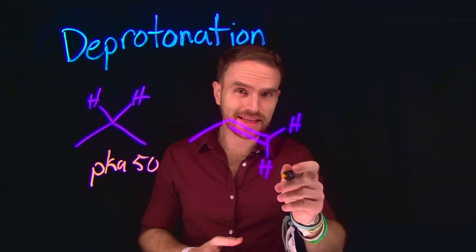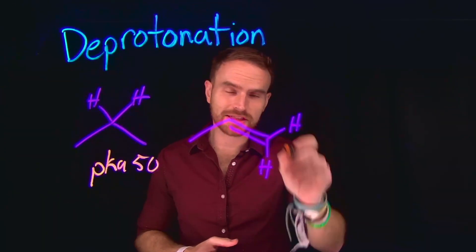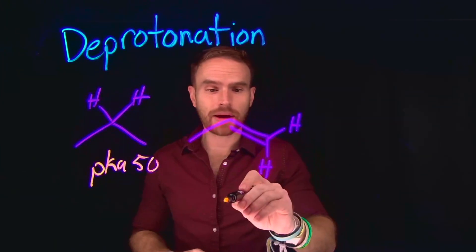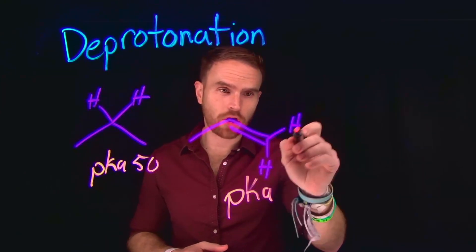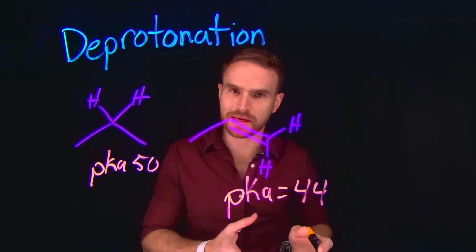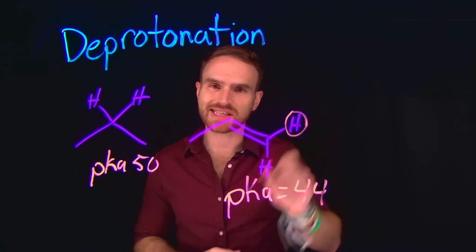As we increase the S character involved in the carbon attached to those hydrogens, like in that of an alkene, we increase the acidity by lowering the pKa. So the pKa for these carbon hydrogen atoms is around 44. And notice that as we lower the pKa, we're making more and more acidic protons.